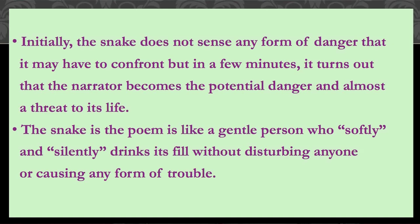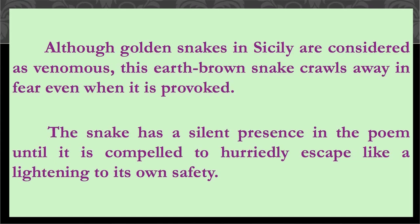But in a few minutes, it turns out that the narrator becomes a potential danger and almost a threat to the snake's life. The snake in the poem is like a gentle person who moves softly and silently — notice the words 'softly' and 'silently' used for the snake. The snake drinks its fill without disturbing anyone or causing any form of trouble. Although golden snakes in Sicily are considered venomous, this earth-brown snake crawls away in fear even when provoked. The snake has a silent presence in the poem until it is compelled to hurriedly escape like lightning to its own safety.